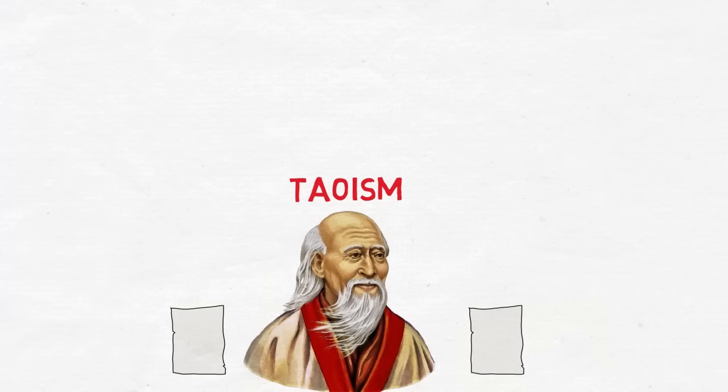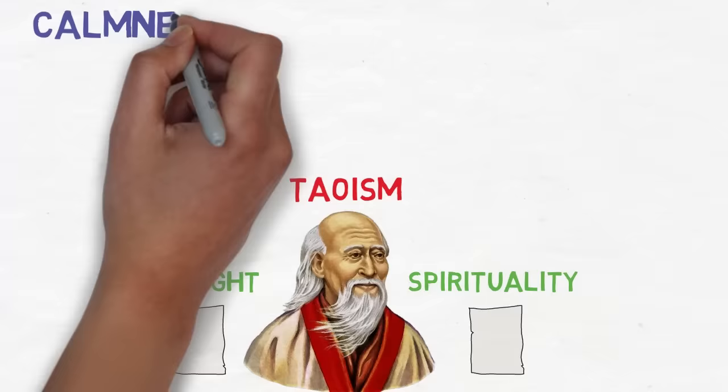According to Lao Tzu, calmness is a state of inner peace and tranquility, free from the distractions and disturbances of the outside world.